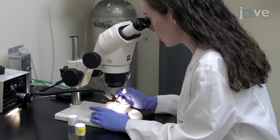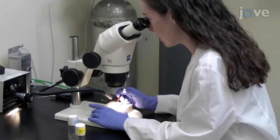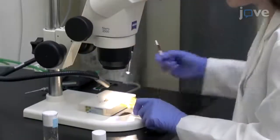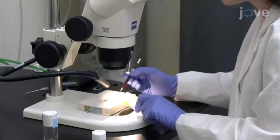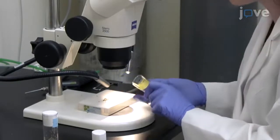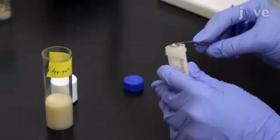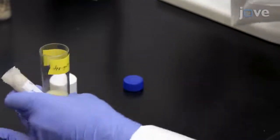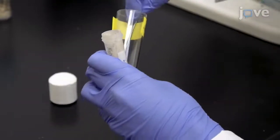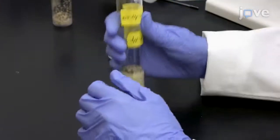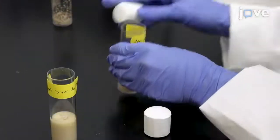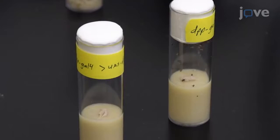Begin by crossing 30 to 40 virgin female DPP-Gal4 flies with 10 to 15 male UAS DPP-GFP flies. Encourage egg-laying by adding a small amount of yeast paste to a fresh vial of food. To collect the eggs, flip the crossed flies into the vial and allow them to lay for three to four hours before removing them.